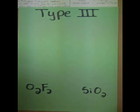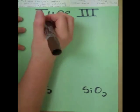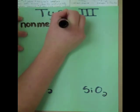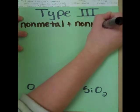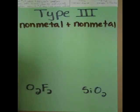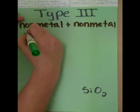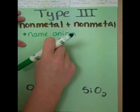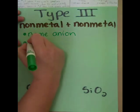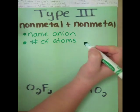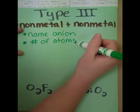So that was type 1 and type 2, dealing with compounds that have a metal and non-metal. In type 3, we deal with compounds that have two non-metals. For these, we name our first element, and after naming it, we must determine the number of atoms and use Greek prefixes to label it.